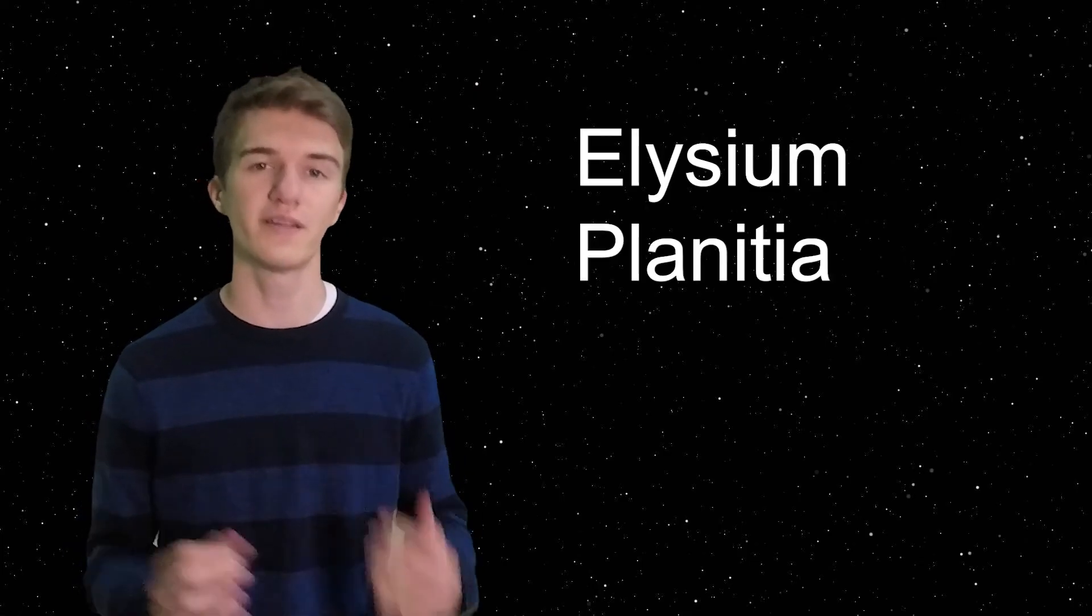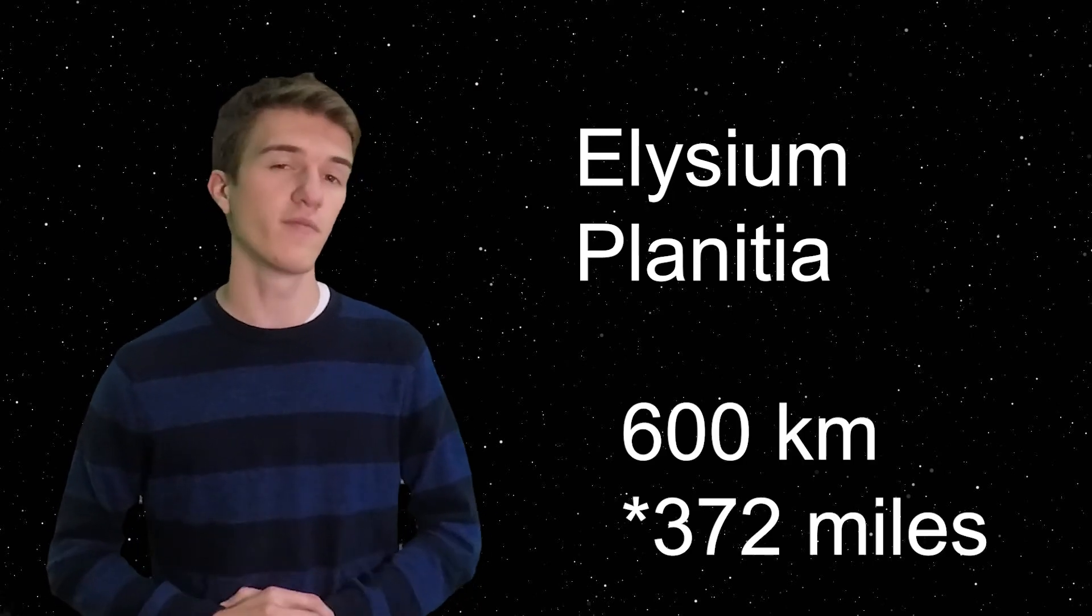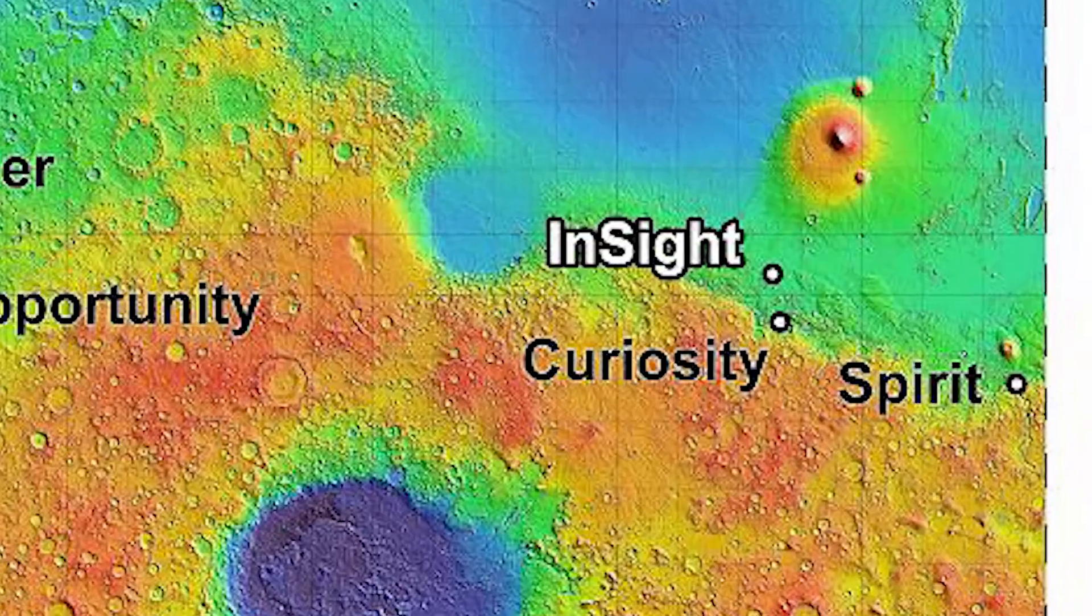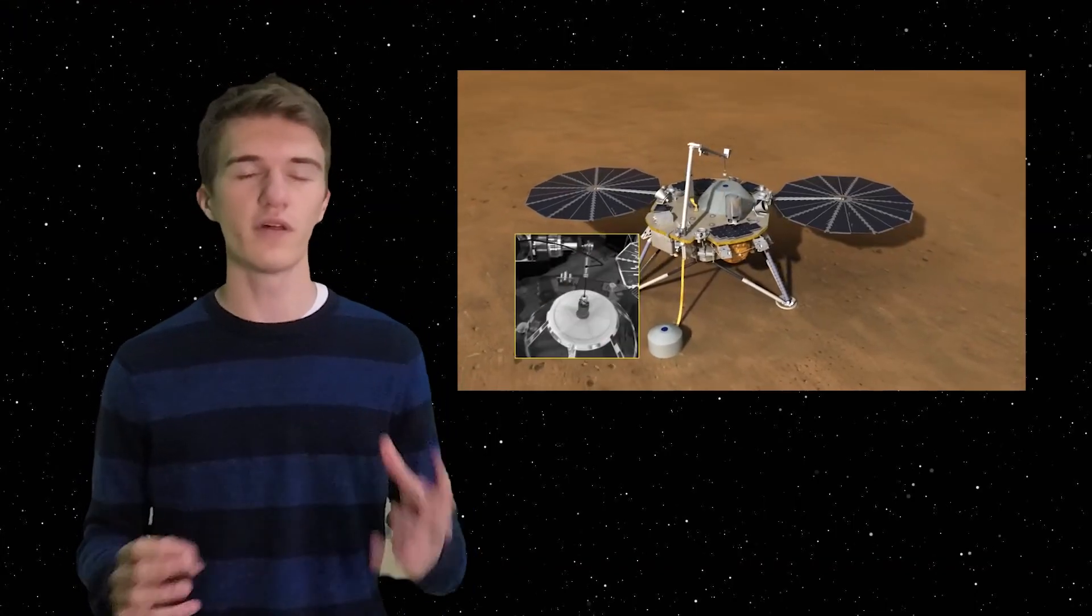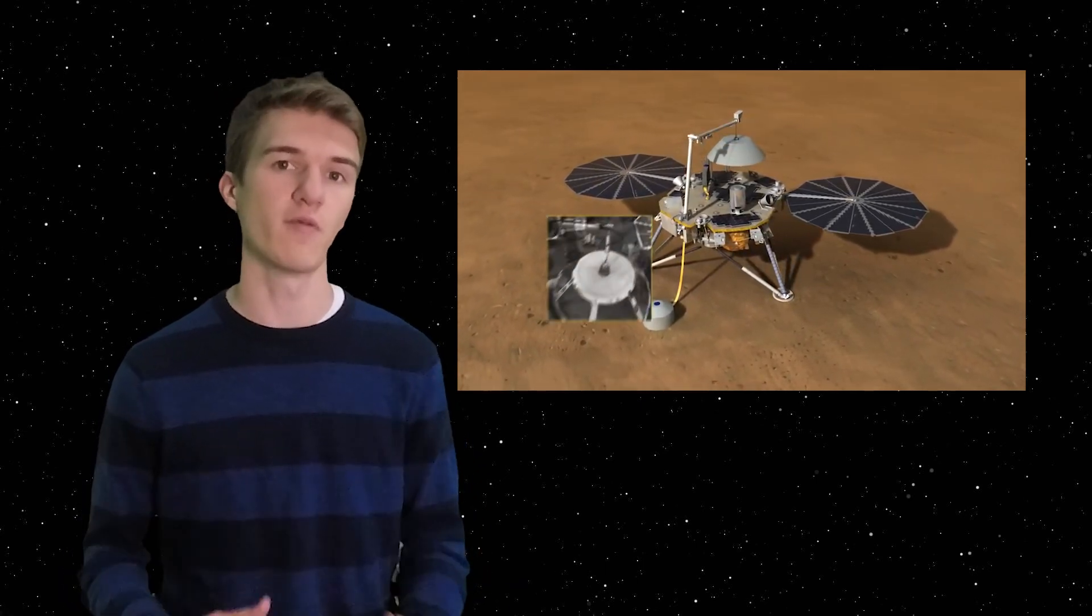So it turns out NASA chose Elysium Planitia, the area on Mars which is about 600 kilometers away from the Curiosity rover for InSight to land. So the mission overall is planning to last about two Earth years or a little over one Mars year and it's going to take about 50 to 100 days to get the experiments up and running.